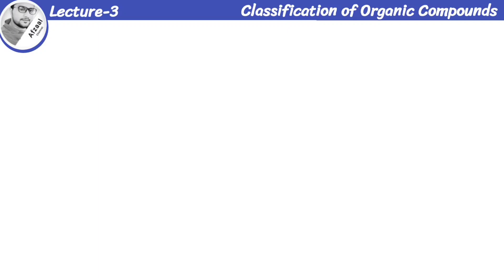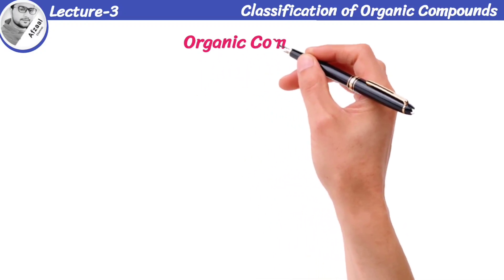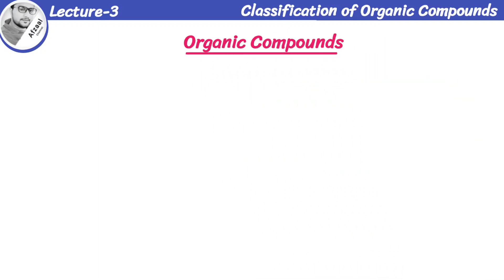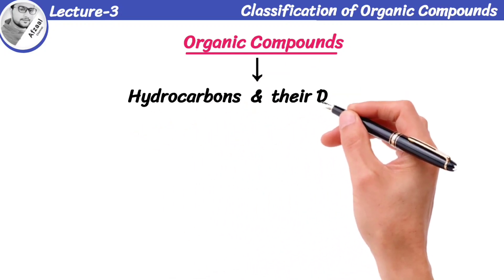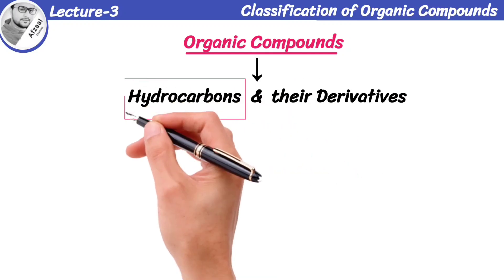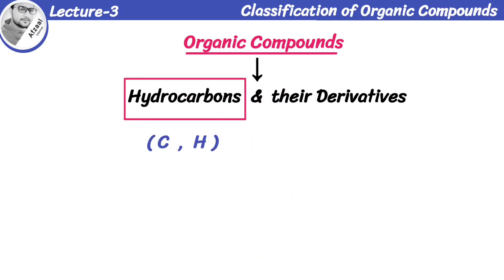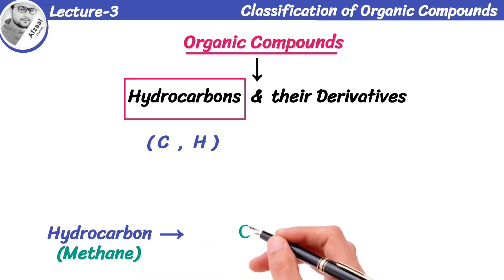Before discussing classification, let's first understand what organic compounds are. Organic compounds are carbon-based compounds. They are hydrocarbons and their derivatives. Hydrocarbons are the compounds of carbon and hydrogen. We take an example of hydrocarbon, that is methane found in natural gas containing both carbon and hydrogen elements.